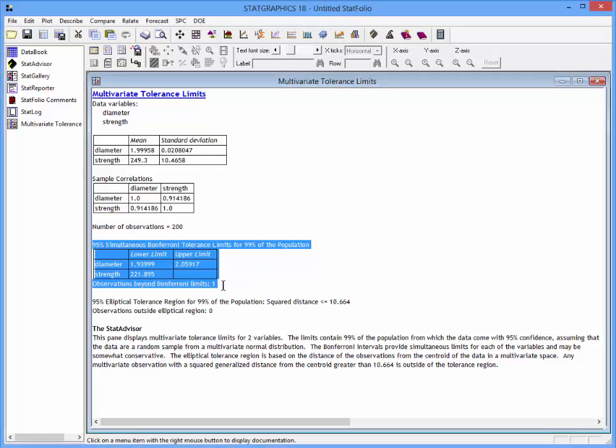You'll also see a note that there was one observation out of my 200 sample medical devices that was outside these Bonferroni limits. However, since the Bonferroni limits are completely within the specification, I can be 95% certain that at least 99% of my population from which the data came is within spec.